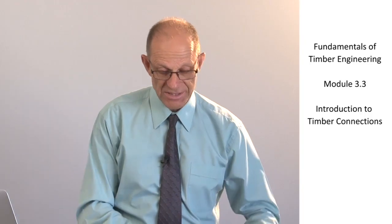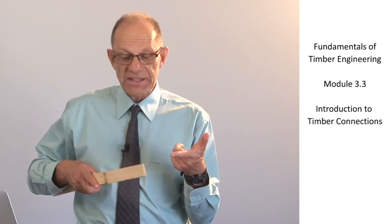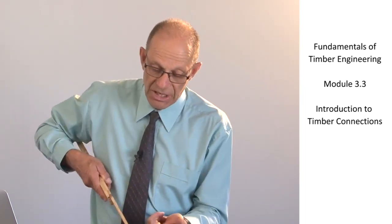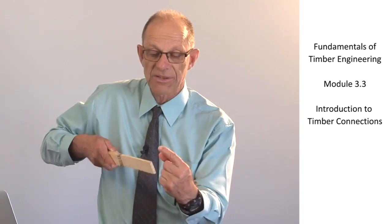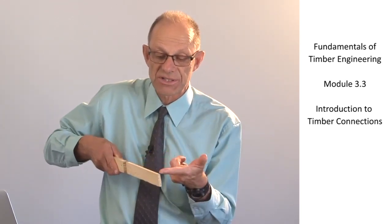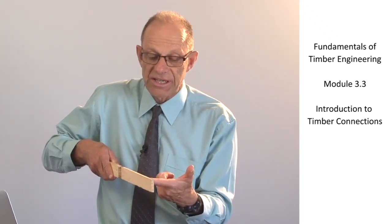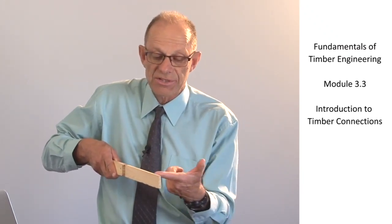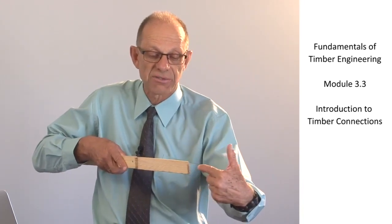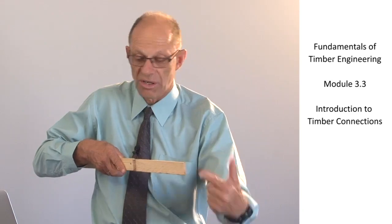For pieces of timber, the most effective connections penetrate the side grain. The end grain is at the end of the piece, and side grain is on the other faces. Connectors are most effective when they're penetrating the side grain and less effective when going into the end grain of the timber.